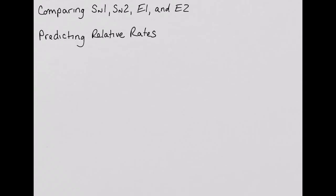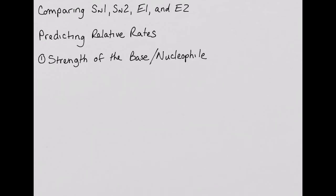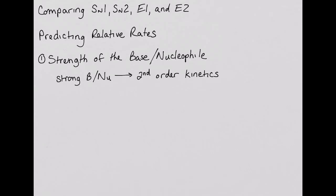In determining the relative rates of the different mechanisms, there are several components of the reaction that we can consider. First, let's talk about the base or nucleophile strength. The strength of the base or nucleophile present will help determine the order of the reaction. If we have a strong nucleophile or base present, it will determine that a second-order mechanism will occur. A strong base or nucleophile causes the second-order mechanism to occur very quickly. In other words, a strong base will abstract a proton, or a strong nucleophile will attack the electrophilic carbon faster than the substrate can ionize. Therefore, the reaction will most likely go by a second-order mechanism.